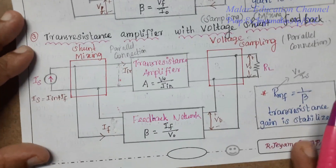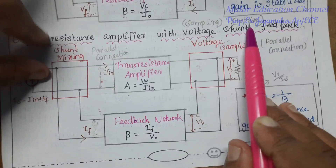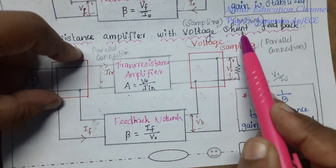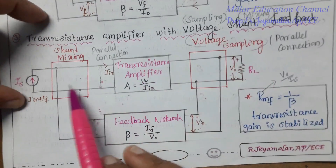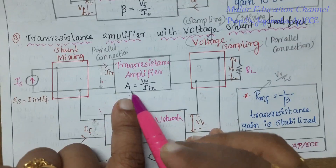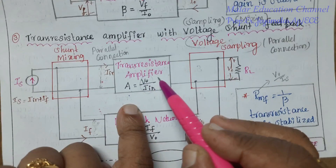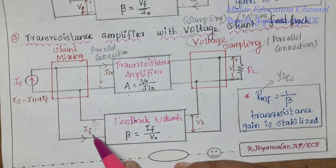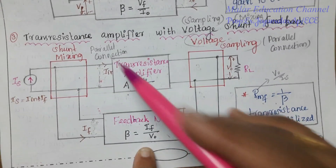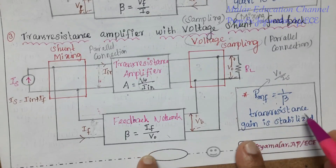Third type: transresistance amplifier with voltage shunt feedback. Voltage is sampling (output section) so voltage means parallel connection. Shunt is mixing (input section) and shunt also means parallel connection, so both input and output are parallel connections. Gain A = V-out divided by I-in. Feedback factor beta = If divided by V-out. Closed-loop transresistance gain Rmf = 1/beta, so transresistance gain is stabilized.